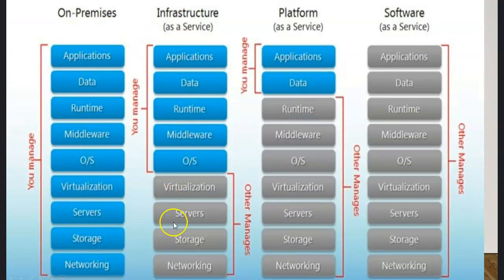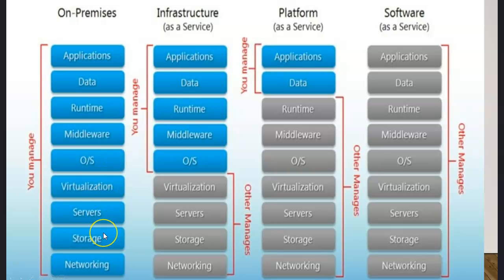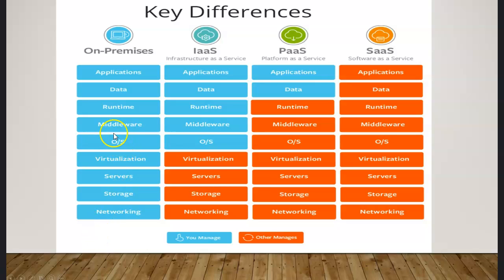I'm going to talk on the same topic with a cleaner picture. When we talk about on-premises, that is nothing but your own data center. Within your own data center, you will have your own networking like switches, routers, storage, and servers. That means you have to buy servers, buy storage, buy virtualization software, do the virtualization, install the operating systems, maintain patch management and middleware, and build your data with applications and runtime. Finally, the applications will be ready for consumers or for your business.